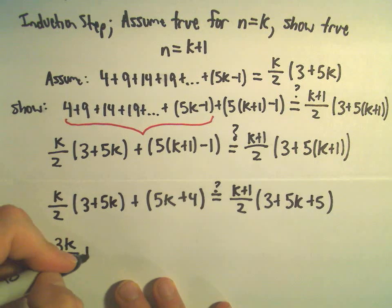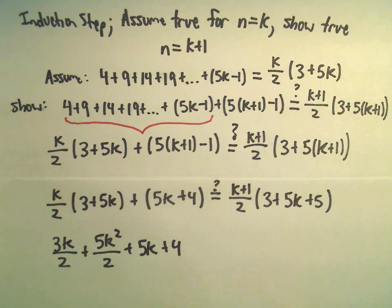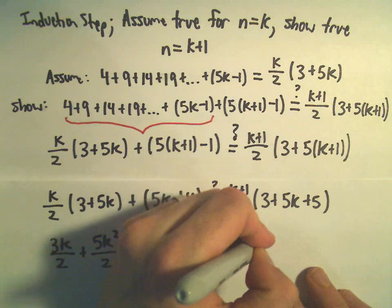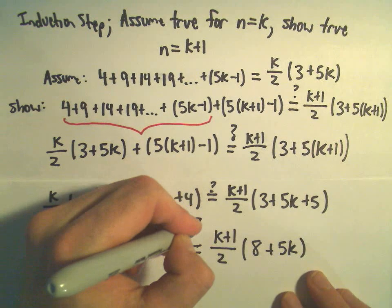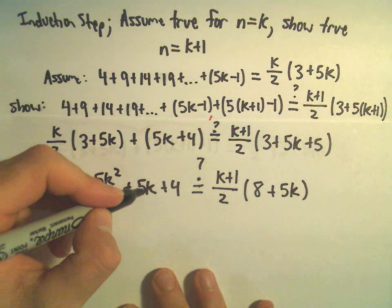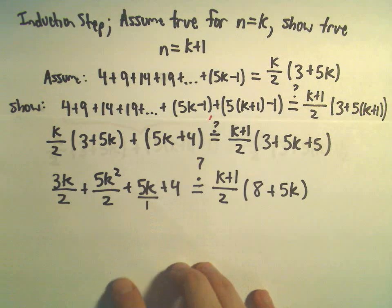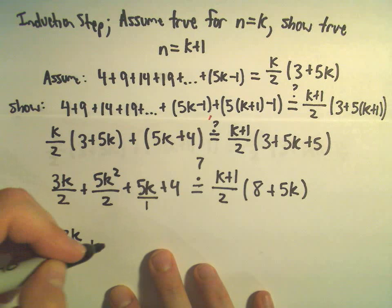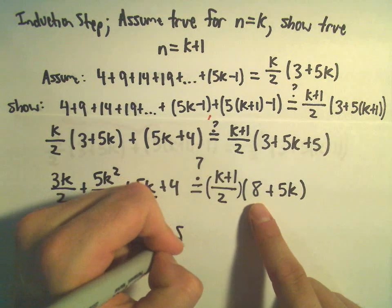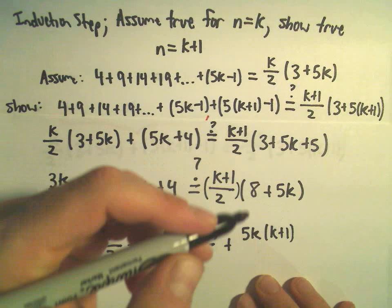On the left side, if we distribute, we get 3k over 2 plus 5k squared over 2 plus 5k plus 4. On the right side, let's clean up inside the parentheses first: 3 plus 5 gives us 8, and we still have 5k. We could get common denominators on the left by multiplying 5k top and bottom by 2, giving us 10k over 2 plus 3k over 2, which is 13k over 2 plus 5k squared over 2 plus 4. On the right, if we distribute, we get 8 times k plus 1 over 2 plus 5k times k plus 1 over 2.